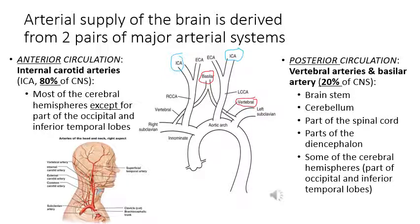The blood supply of the brain is derived from two major arterial systems. One is located on the more anterior side, which comes from the two internal carotid arteries, supplying 80% of the central nervous system. The other is the posterior circulation, which comes from the vertebral arteries. These two vertebral arteries combine to form the basilar artery, supplying 20% of the central nervous system.